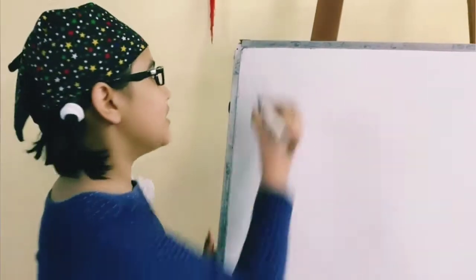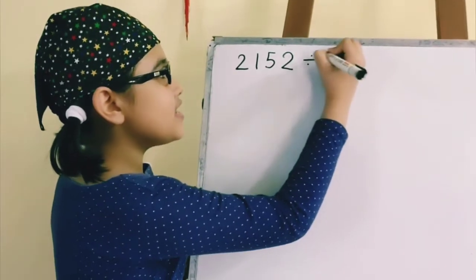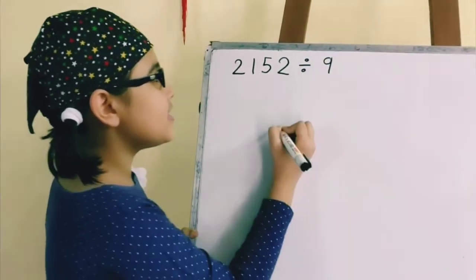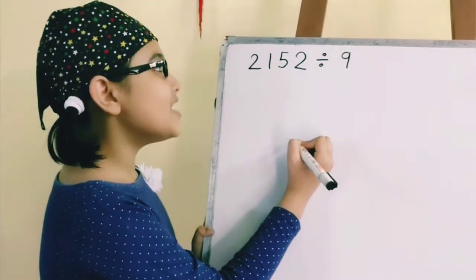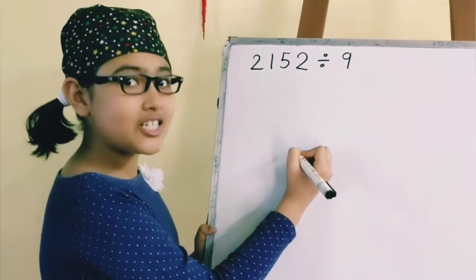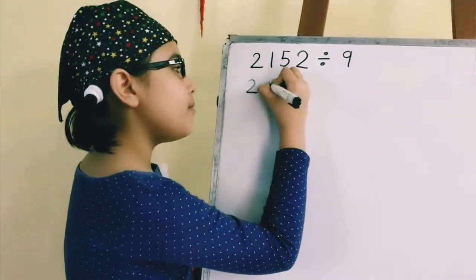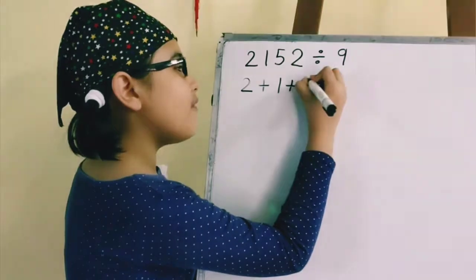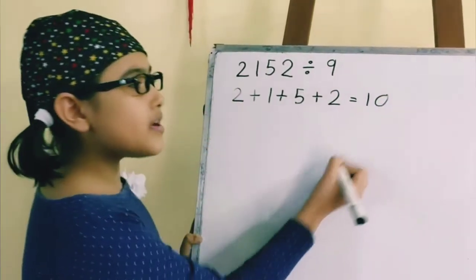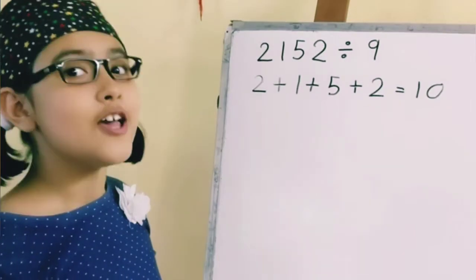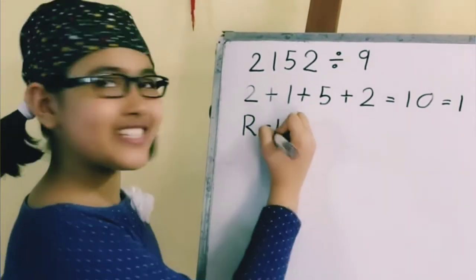Let's take a number as an example: 2, 1, 5, 2 divided by 9. Our first step will be to do the digit sum. What is the digit sum? Digit sum is to add all the digits in the number. So, 2 plus 1 plus 5 plus 2 is equal to 10. But 10 is also a two-digit number, so we'll do the digit sum again and get 1. So, the remainder is 1.